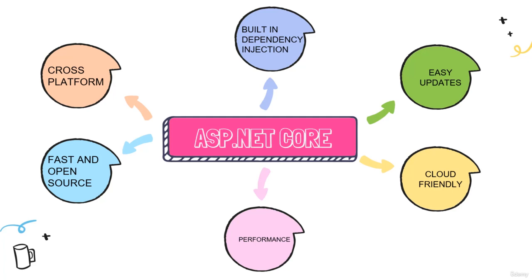The ASP.NET Core compiler will eventually optimize the entire code whenever the code is recompiled using the .NET Core framework. .NET Core's actual performance is multiple times that of any of the framework's previous implementations. Because of that, it is clear that Microsoft has a long-term plan with .NET Core technology. So with that brief overview, let's continue our learning in the next video.